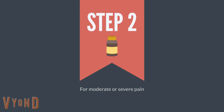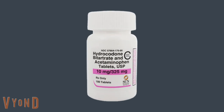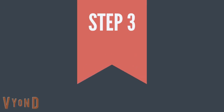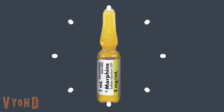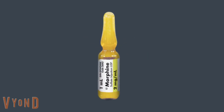Step 2: If or when non-opioids do not adequately relieve pain, we add an opioid intended for moderate pain, such as hydrocodone, usually combined with acetaminophen. We may add or continue adjuvant therapy if appropriate. Step 3: If or when the opioid for mild to moderate pain no longer adequately relieves pain, switch to an opioid not combined with another agent such as acetaminophen, and one effective for moderate to severe pain, like morphine, oxycodone, or hydromorphone. Do not forget to add adjuvant therapy if appropriate.